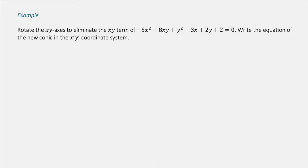To rotate our axes to eliminate the xy term of this conic, we need to go through quite a few conversions. Our conic in standard form is ax² + bxy + cy² + dx + ey + f = 0. We have this exact form here, so a is negative 5, b is 8, c is 1, and so on.